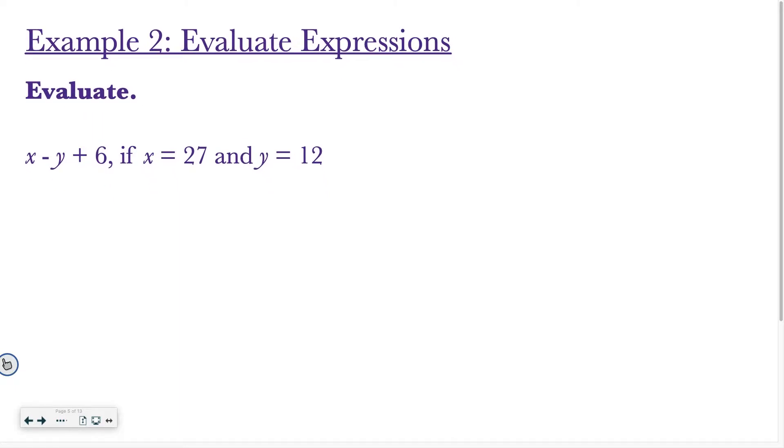Okay, so that's when you're just writing an expression. What if I ask you to evaluate the expression? So we have X minus Y plus 6 if X equals 27 and Y equals 12. So I have X minus Y plus 6. But I know that X equals 27, so I'm going to change my X to be a 27. And then Y equals 12, so I replace the Y with 12. And now it's just order of operations like we practiced yesterday. I have subtraction and addition, those are on the same level of PEMDAS, so I go from left to right. So that means I start with 27 minus 12, that is 15, and then I have plus 6. And then I have 15 plus 6, that is 21, and that is my final answer.